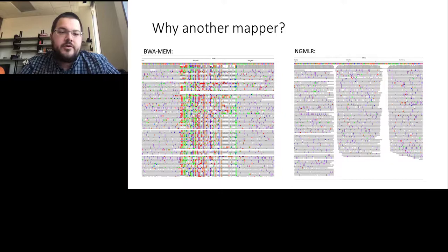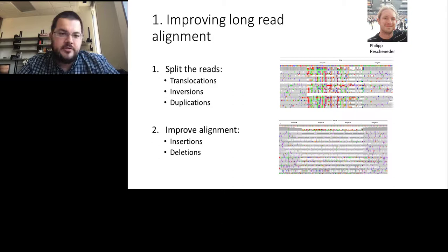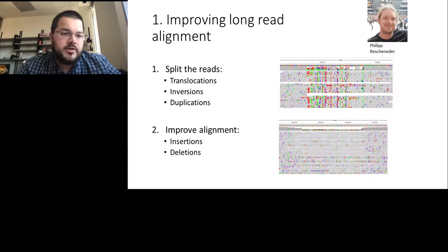We focused NGMLR on improving two parts: first, the split reads to enhance mapping across translocations, inversions, and duplications; and second, improving the alignment itself to better map insertions and deletions. A lot of this work was done by Philip Reschenauer, a former colleague from Vienna.